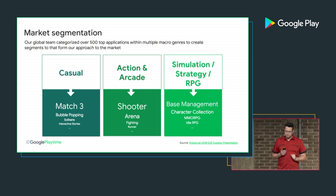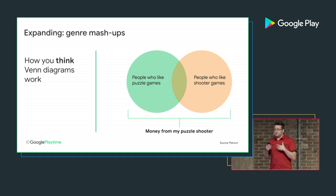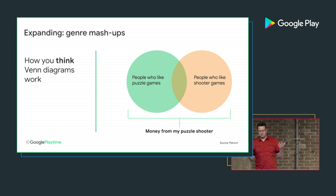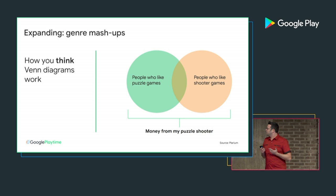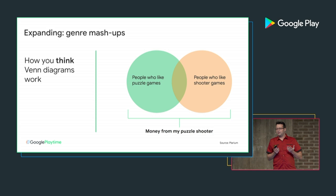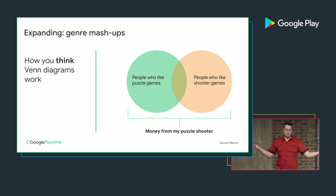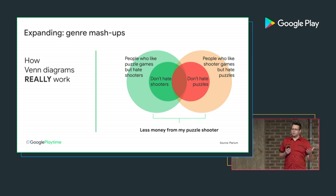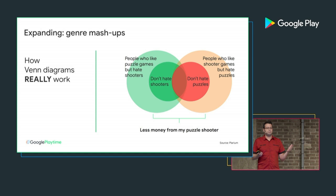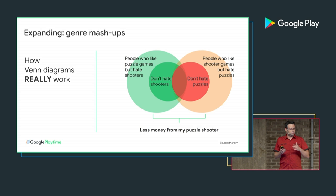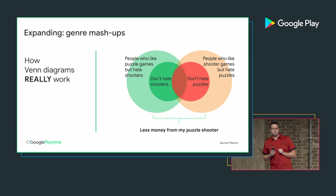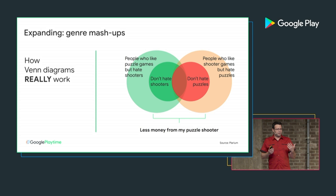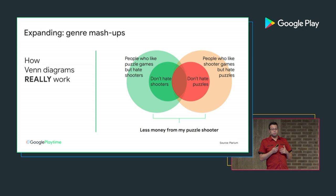When looking at where to expand, it's tempting to think about market size using Venn diagrams — but people often misread them. When making a shooter game that is also a puzzle game, you might think you're tapping the market for both shooter lovers and puzzle lovers. However, that's not how it works: some shooter fans hate puzzle games, and vice versa. The actual audience is much smaller than expected, and it's not necessarily bigger than targeting just one genre. That's why you need to look for genres that are closer to what you're already making.